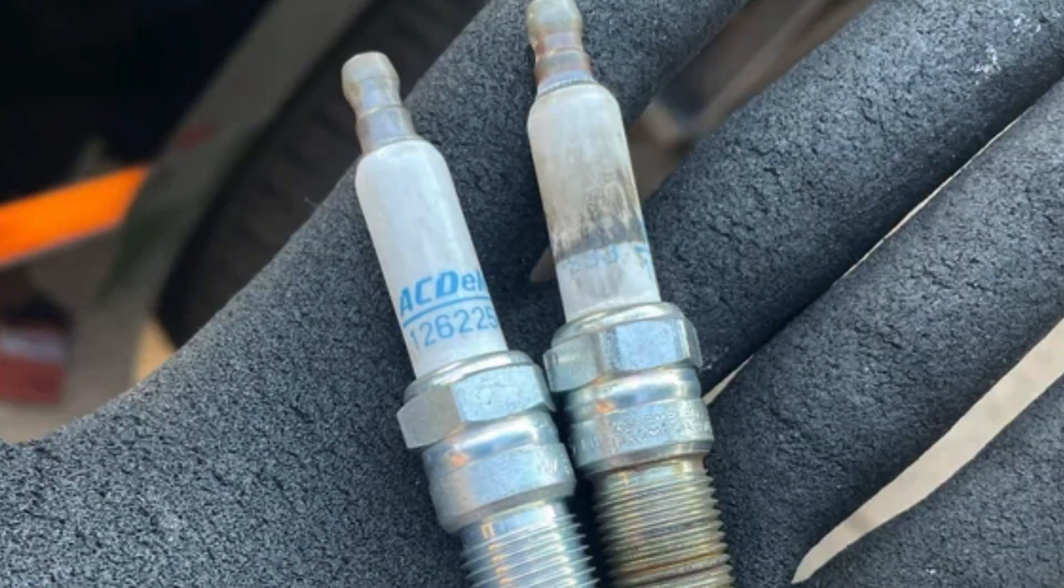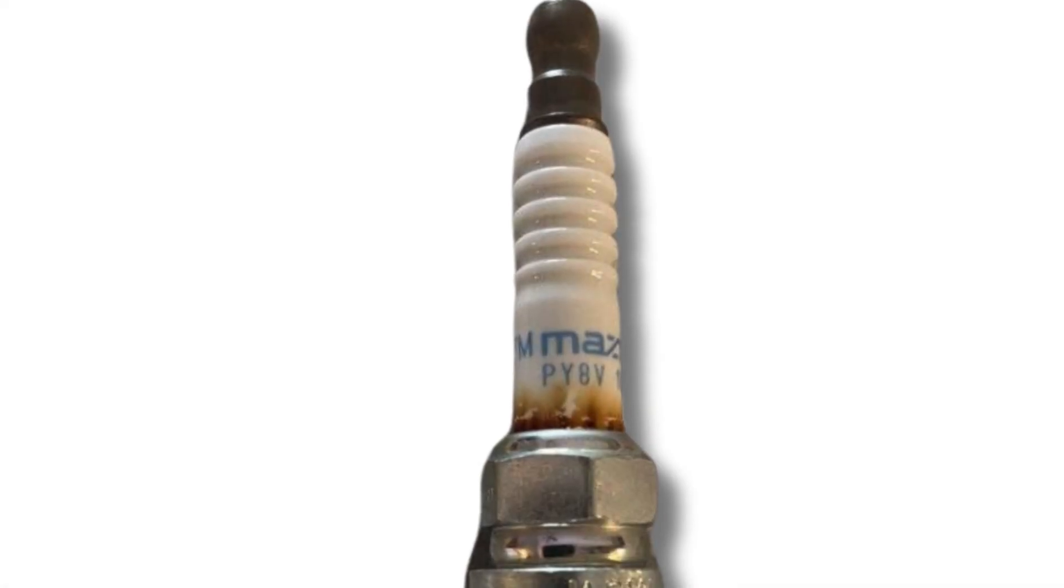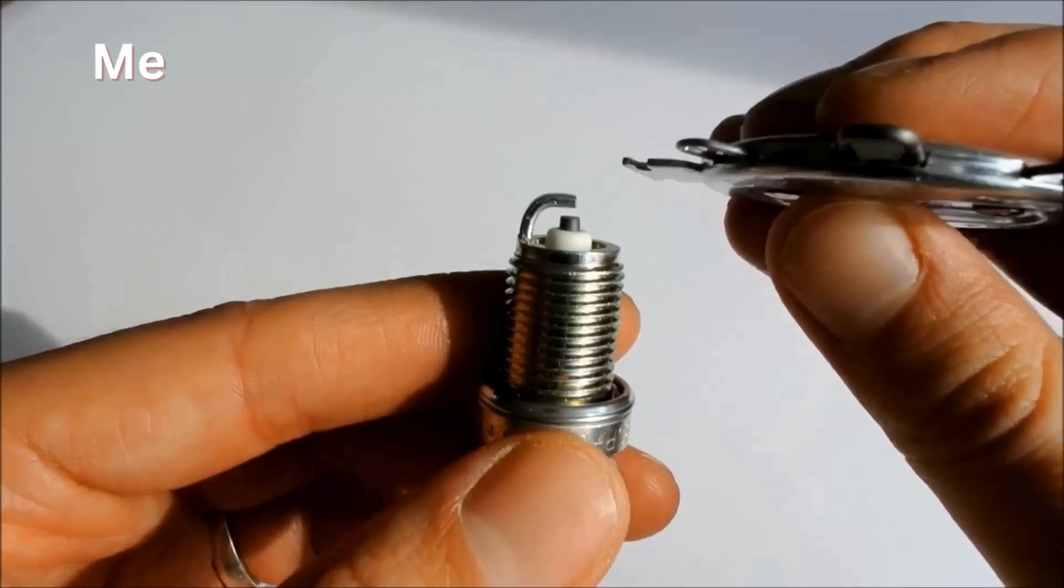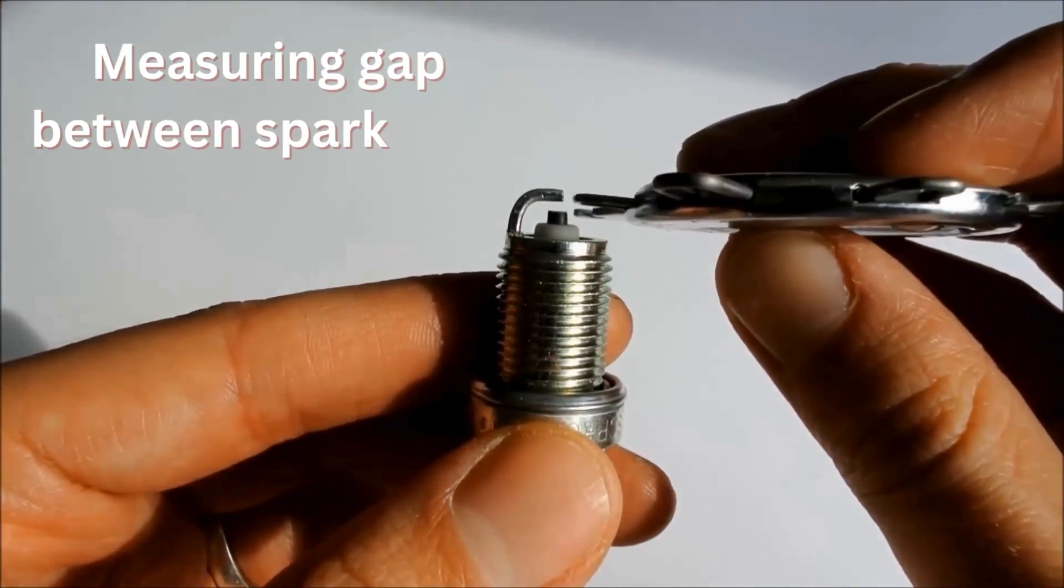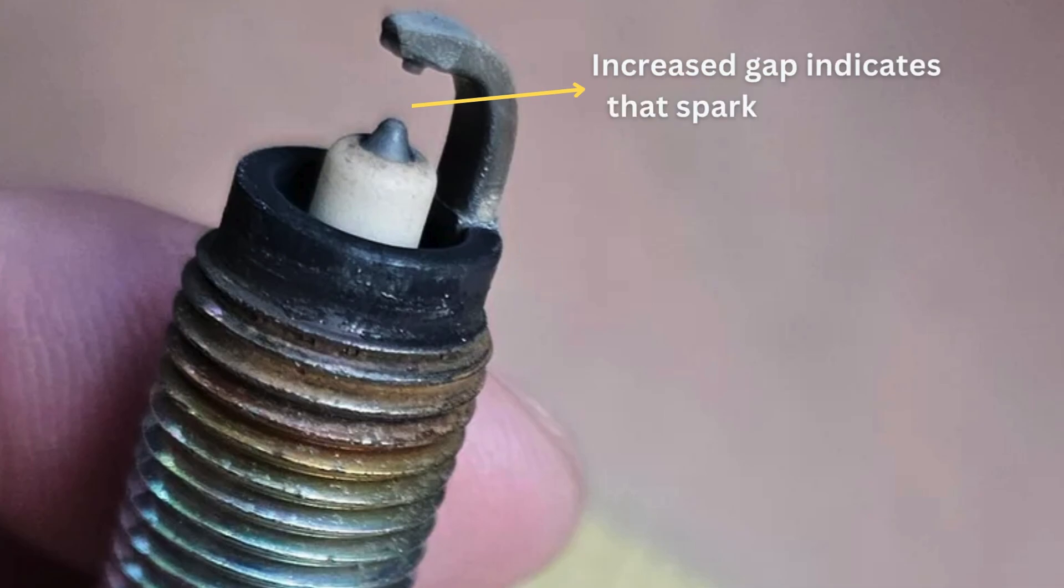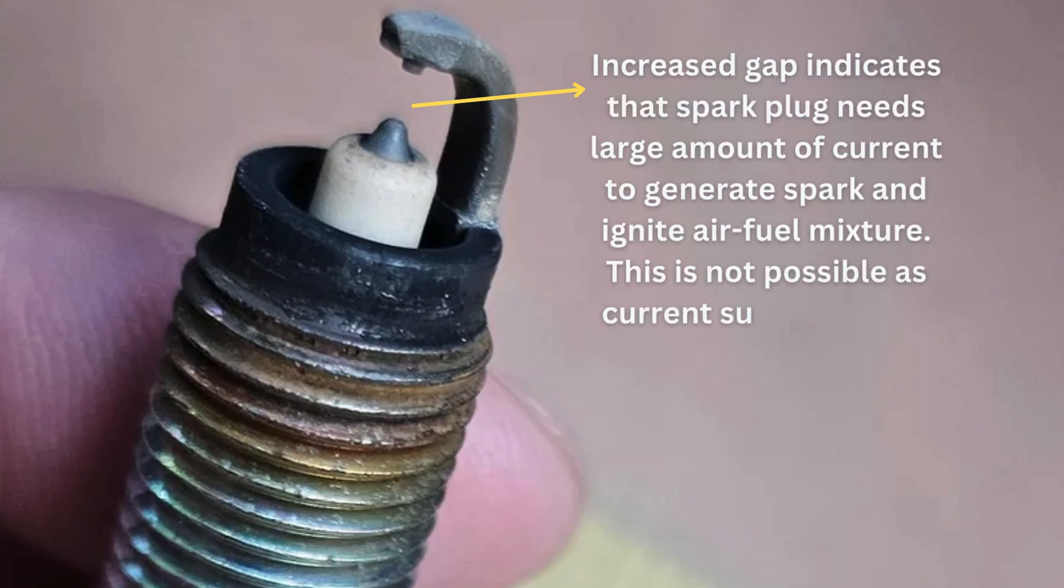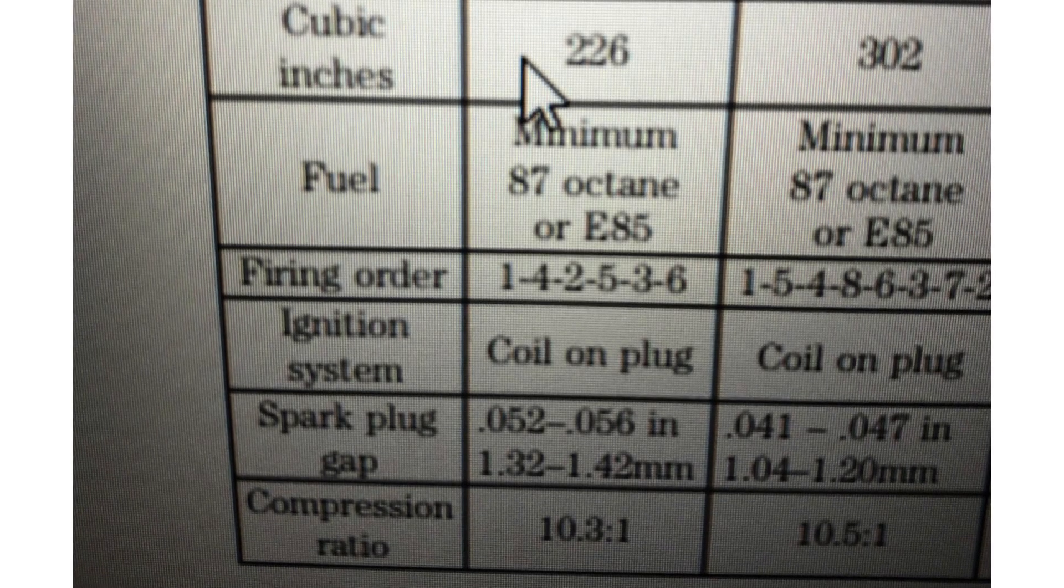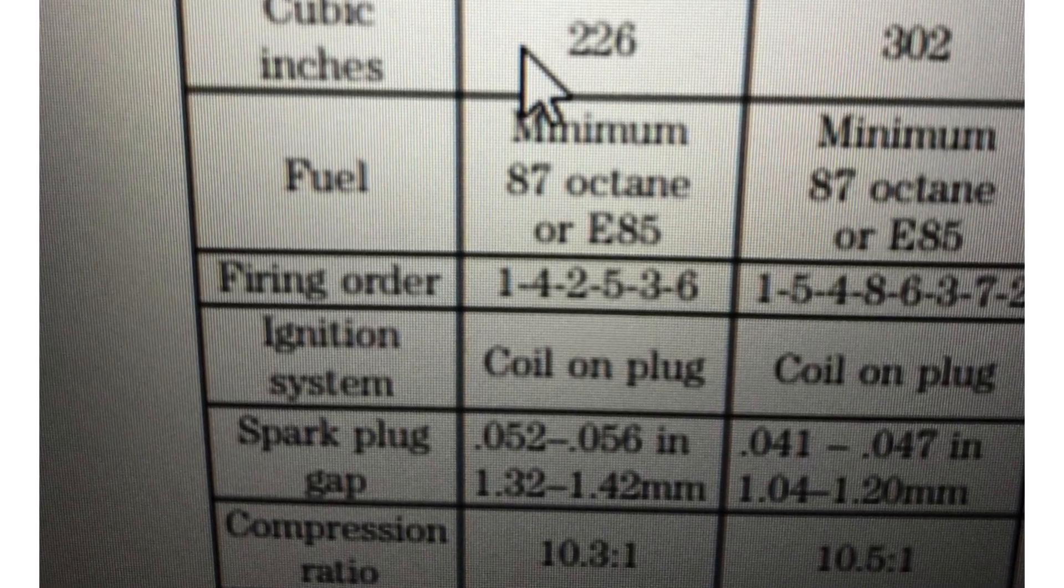Next, look at the white insulator of the spark plug. There shouldn't be any cracks or brownish marks. After visual inspection, assess the gap between spark plug electrodes using a spark plug gap tool. A huge gap indicates that the spark plug needs a very high voltage to ignite the mixture. Use your owner's manual to check the required spark plug gap.